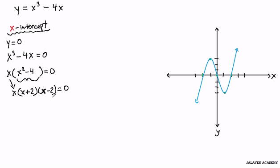So here we actually are going to have three solutions to this. We're going to have x equals 0, x equals negative 2, and x equals positive 2. So these are our x-intercepts.